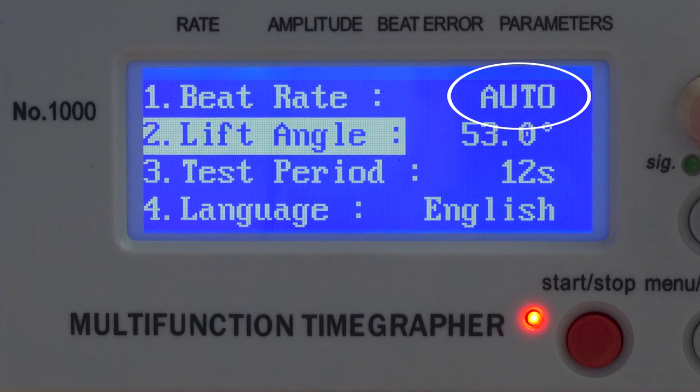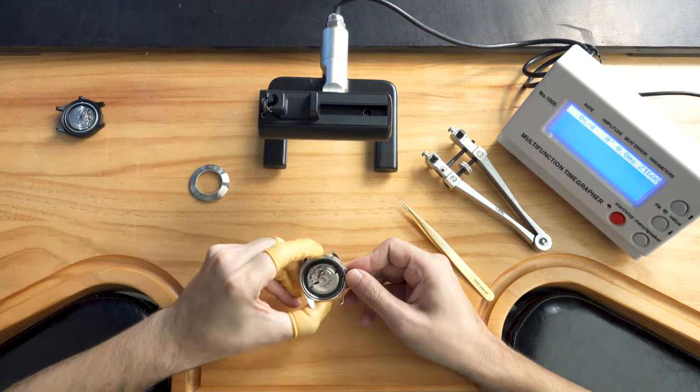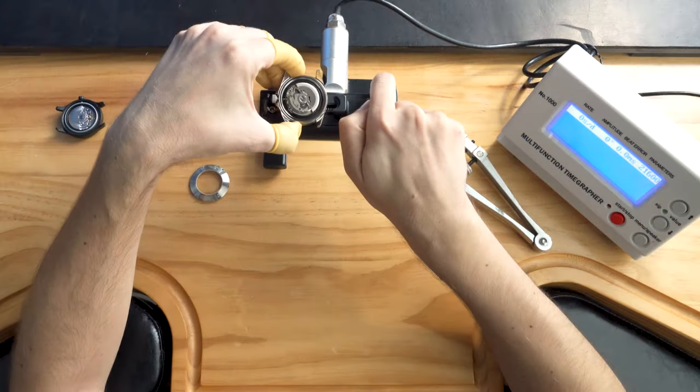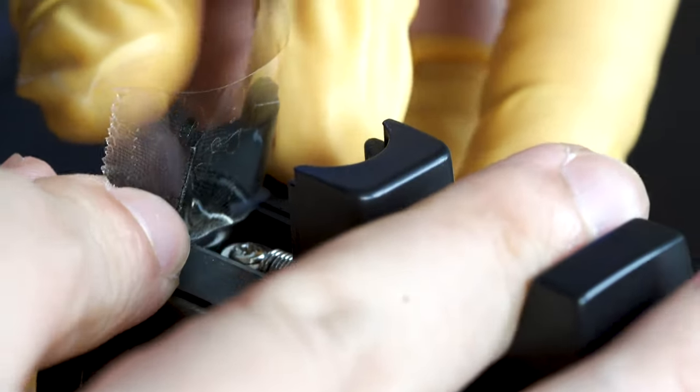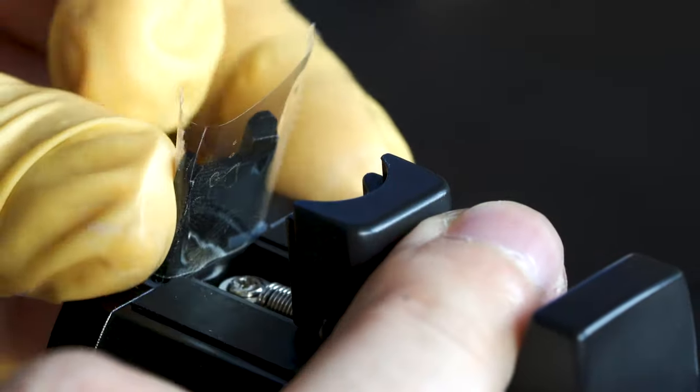Also make sure that a beat rate is set to auto. Now, let's give the watch a full wind, and then put it onto the reader to see how it's doing. A quick tip, you can add a small piece of tape here to prevent it from scratching the case.